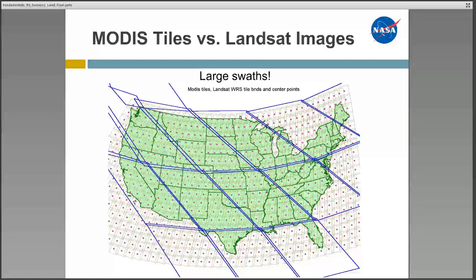The red dots in the center of each of these smaller swaths represent the center of a Landsat image, and the brown squares represent the outline of a MODIS image. The lopsided squares that are in blue are one single MODIS image, so you can see that MODIS covers an area that is much larger than Landsat.